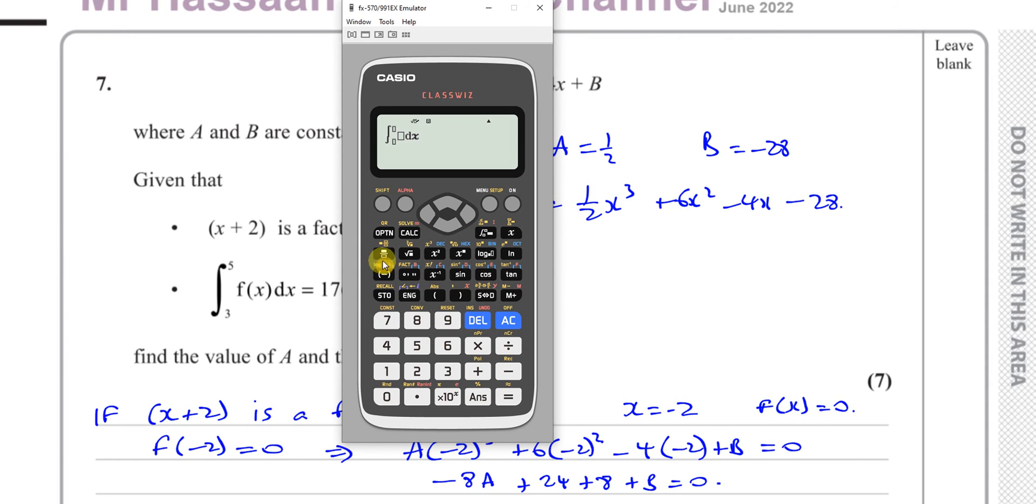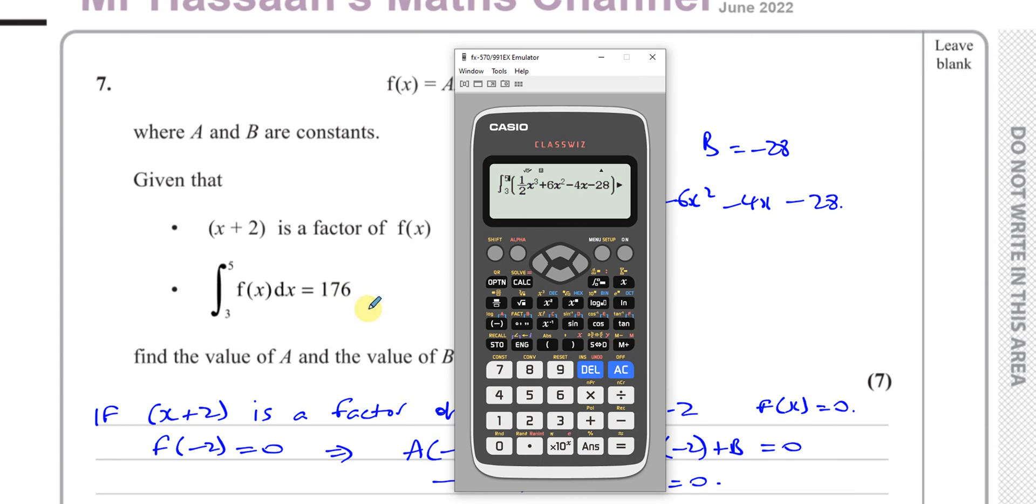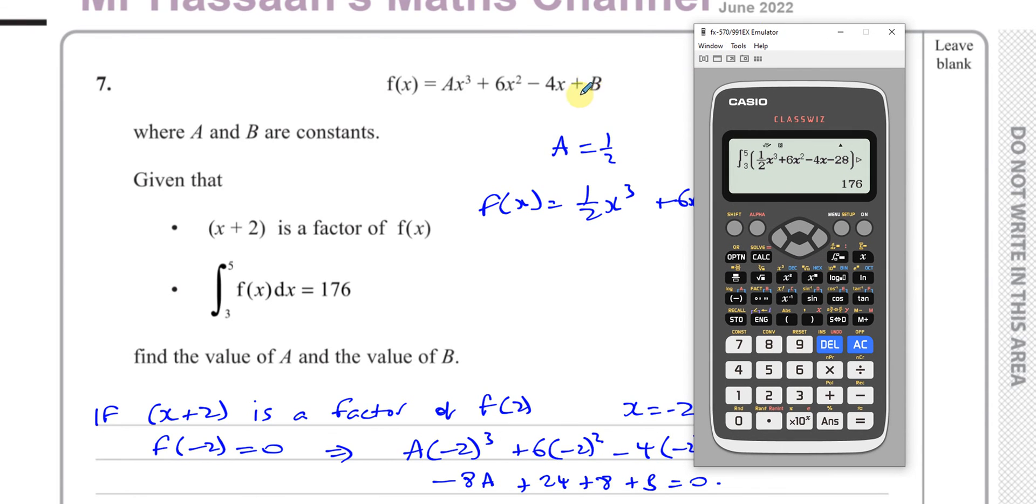So we can see therefore f(x) is going to be (1/2)x³ plus 6x² minus 4x minus 28. Now what you can do in your calculator to check that the answer is correct is you can substitute this into the integral. You can use the integral function and set this up. Put a bracket, you've got 1 over 2, x³, plus 6x², minus 4x, minus 28. Close the bracket, and then you're going to have the limits between 3 and 5. When you press equals, hopefully if we got the right values, the answer should come out as 176. And it does. So we can be sure that a half should be in place of the a and -28 in place of the b.